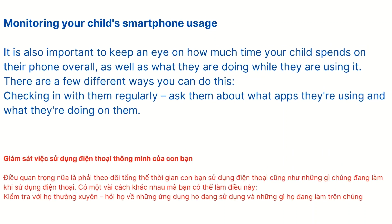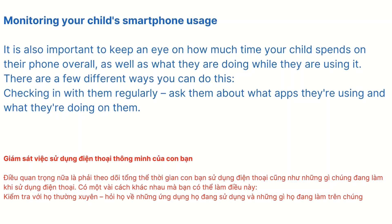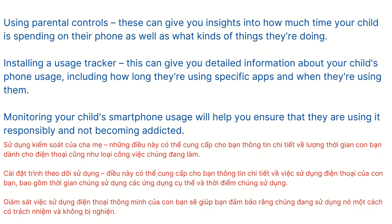It is also important to keep an eye on how much time your child spends on their phone overall, as well as what they're doing while they're using it. You can do this by checking in with them regularly and asking about what apps they're using. Using parental controls can also give you insights into how much time your child is spending on their phone and what kinds of things they're doing. Installing a usage tracker can give you detailed information about your child's phone usage, including how long they're using specific apps and when they're using them. Monitoring your child's smartphone usage will help you ensure that they are using it responsibly and not becoming addicted.